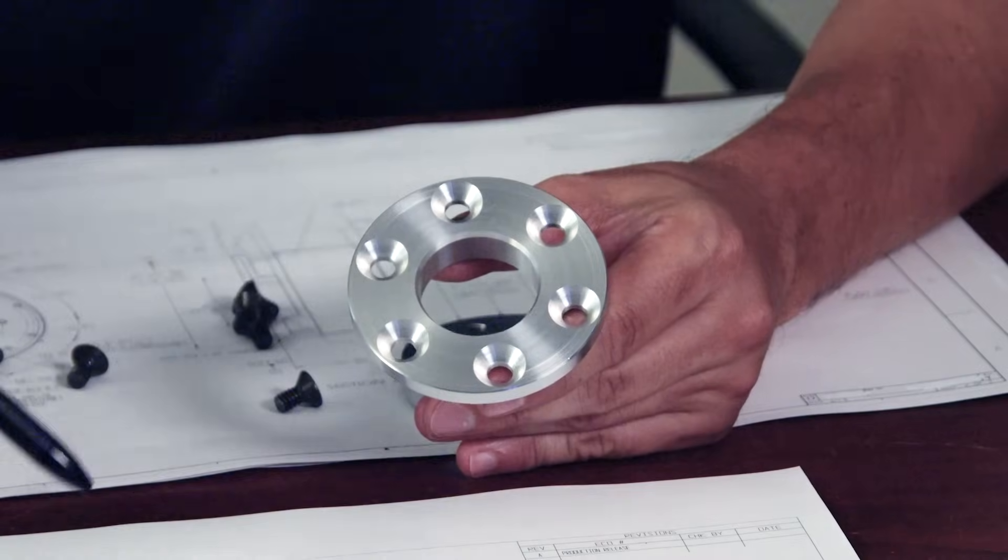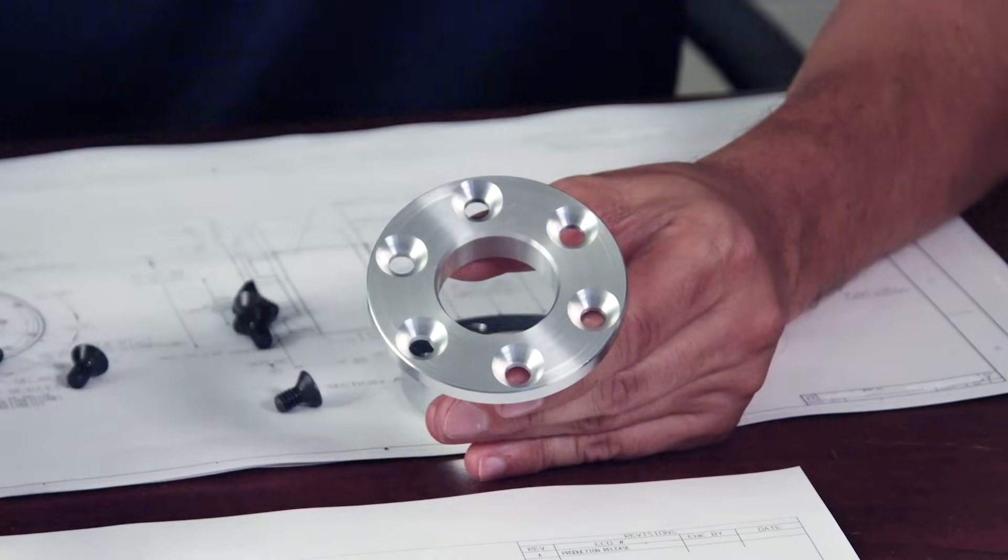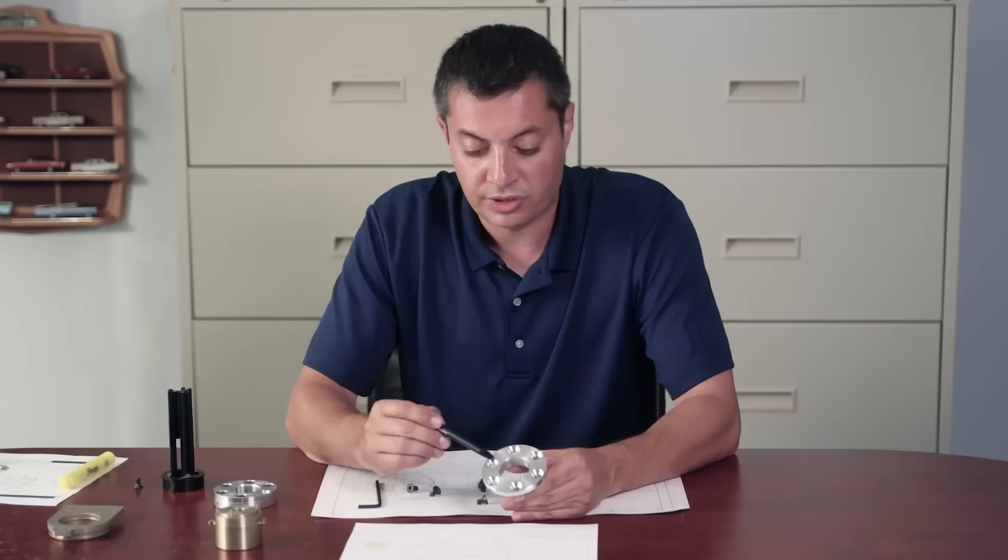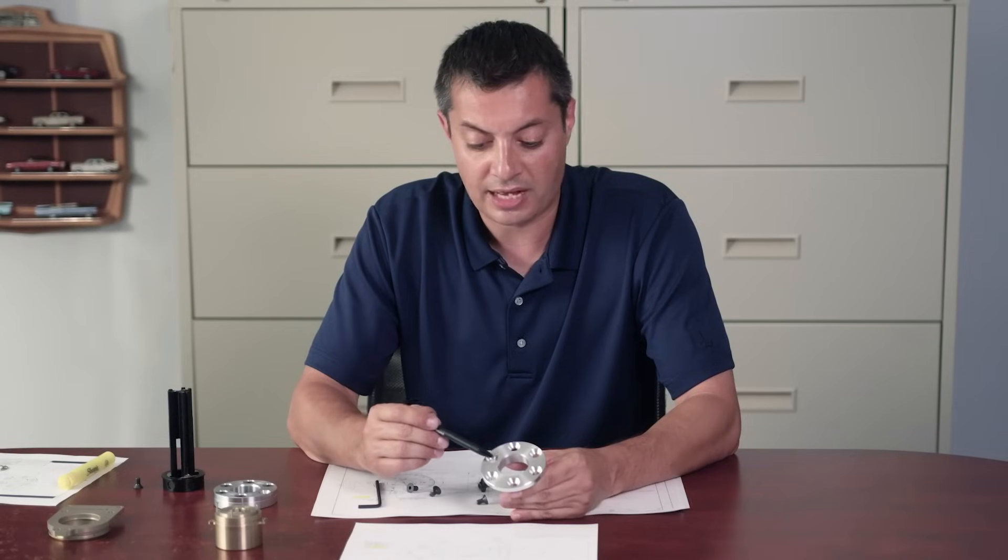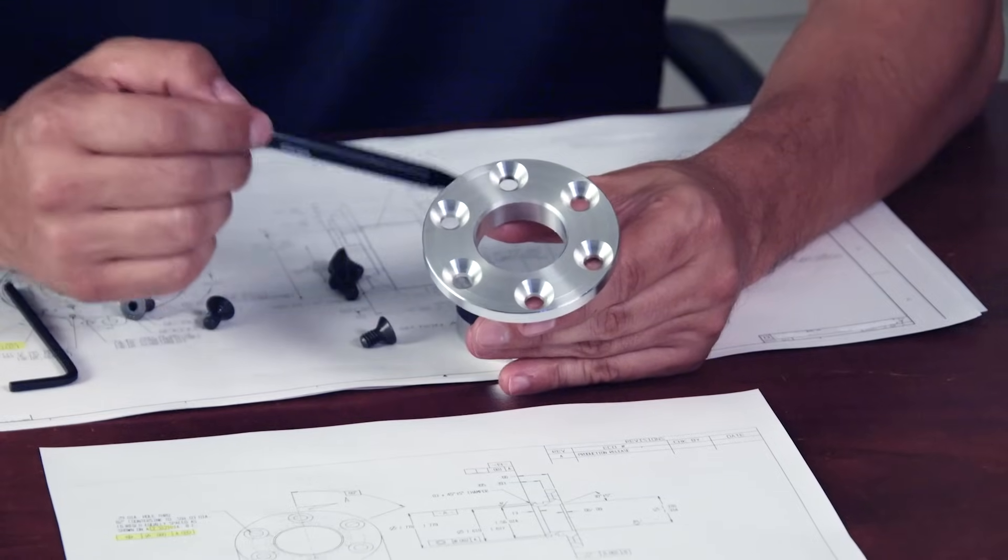Here we have another part that is showing the same bolt circle pattern. The engineer doesn't really care exactly where these holes are located, but he needs them to fit on his mating part.